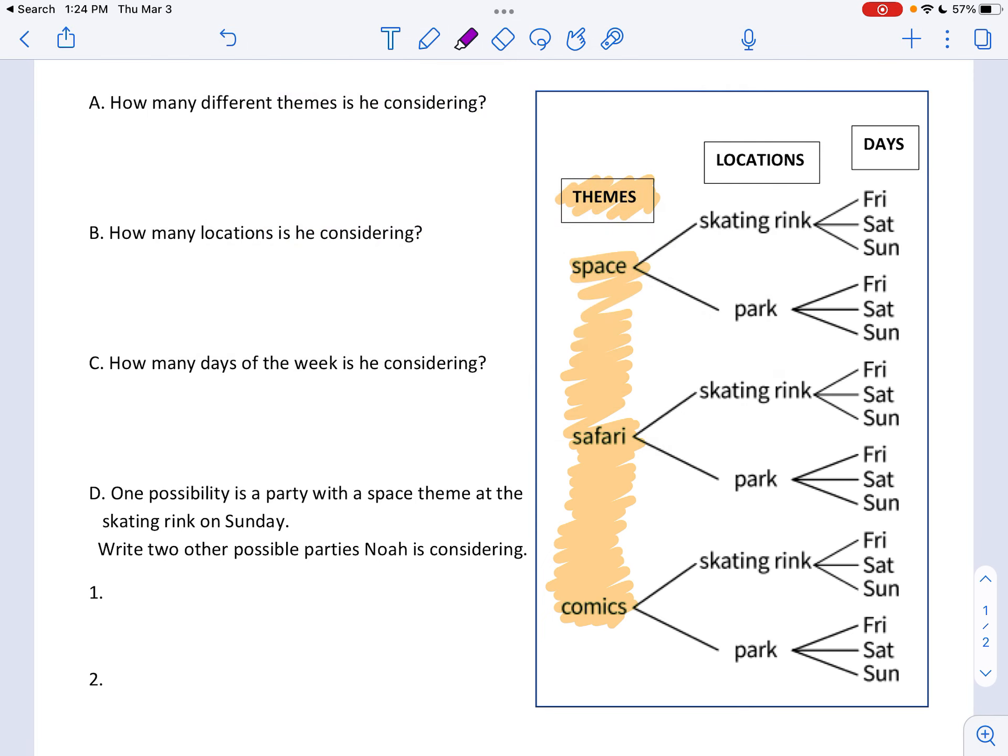Then I see another box that says locations. So that's where. Where is his party going to be held? Maybe it's going to be at the skating rink. And as I keep going down, it says at the park. But if I keep going down, do you see how that repeats?